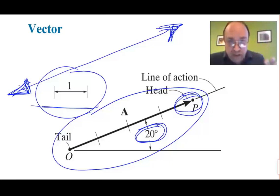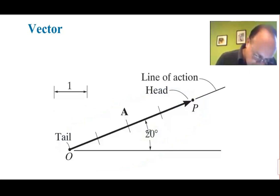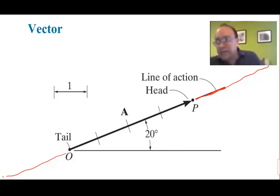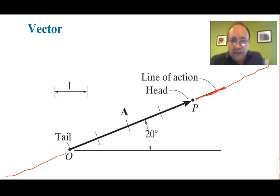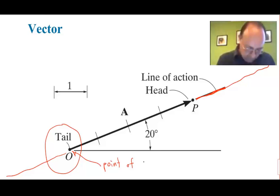Now, when you are representing forces with a vector, you have to add a couple of properties. One is the line of action. The line of action is this line I'm putting here in red — it's just an infinite straight line that goes all the way in both directions. The vector is just a portion of that infinite straight line. Another characteristic of a vector when representing forces is the tail, or what is called the point of application — where the force is applied.